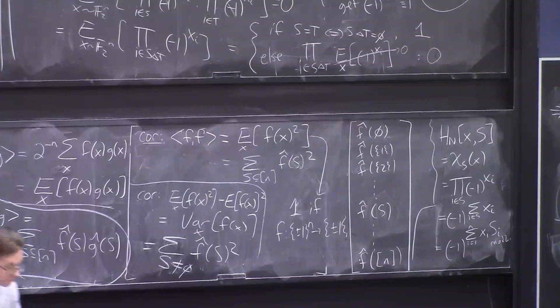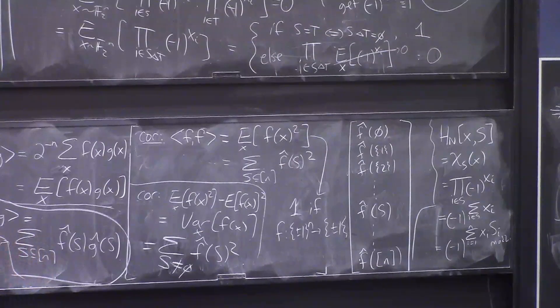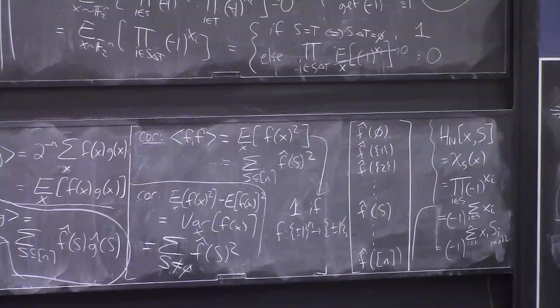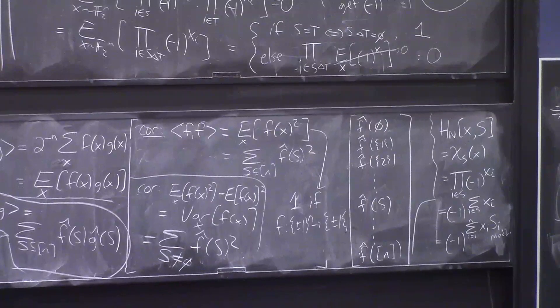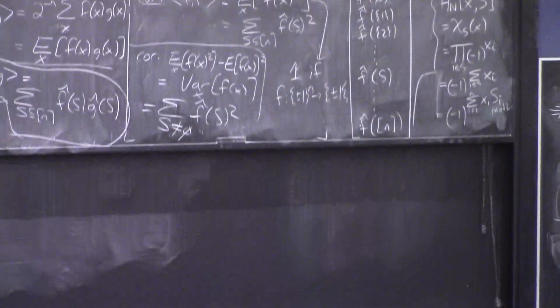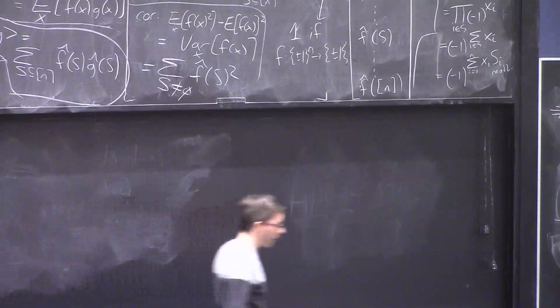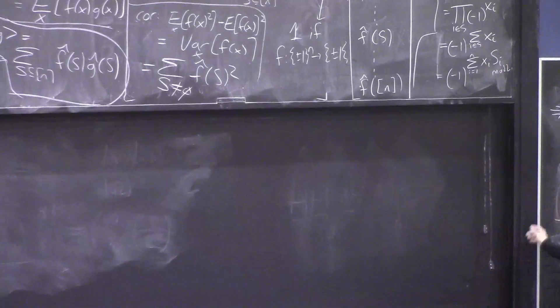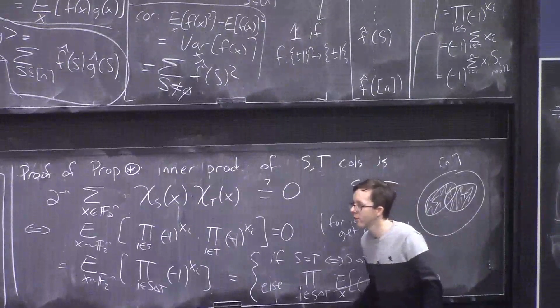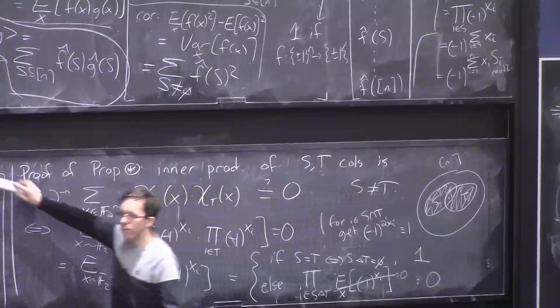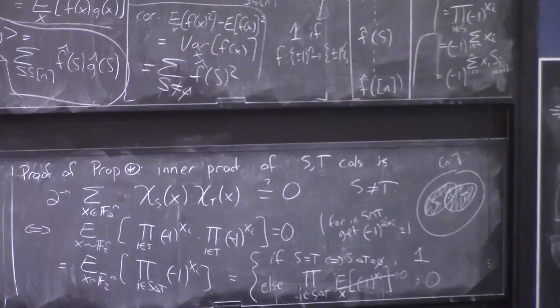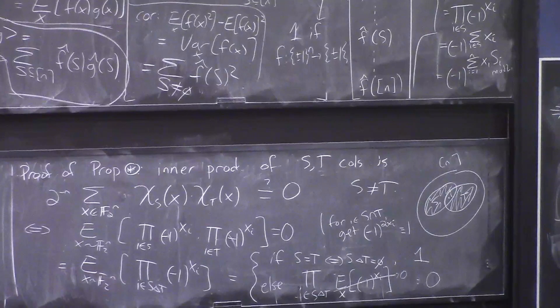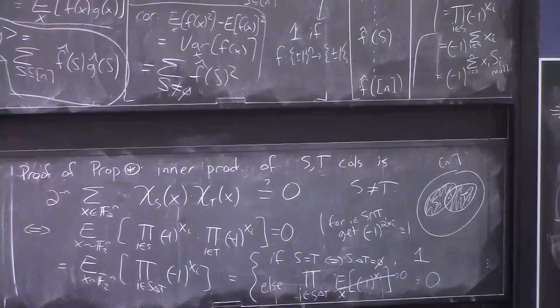I want to tell you some applications. I don't have time to prove any of them, but I want to tell you some applications to a topic that's not even exactly computer science. I'll tell you applications to an area called social choice, which is like the theory of decision making and voting.